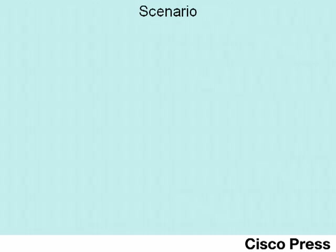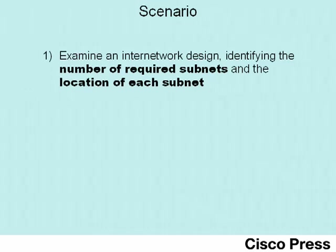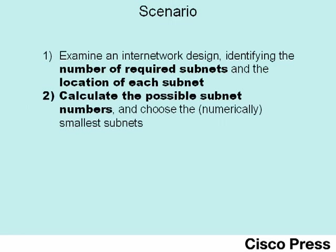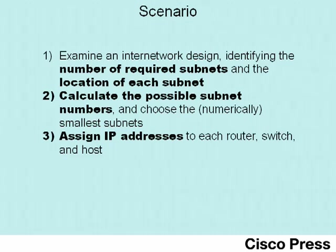This video lab has three main scenario steps. In the first step, we'll examine the topology of a particular internetwork and identify both the number of required subnets and the location of each subnet. Then we'll take a single Class B network number and calculate all the possible subnet numbers when using the same mask throughout that network, and identify the numerically smallest subnets. In the third scenario step, we'll pick IP addresses from each of those subnets to assign to the various hosts and routers in this internetwork.